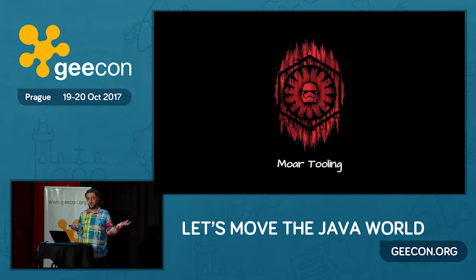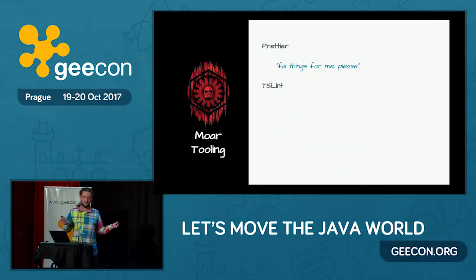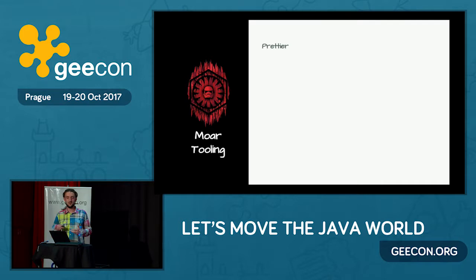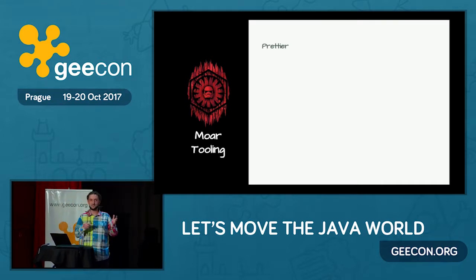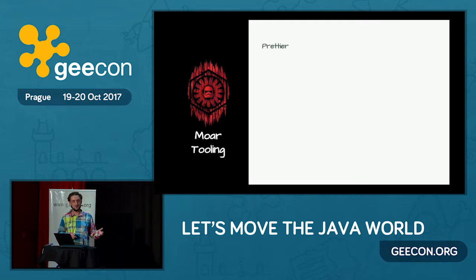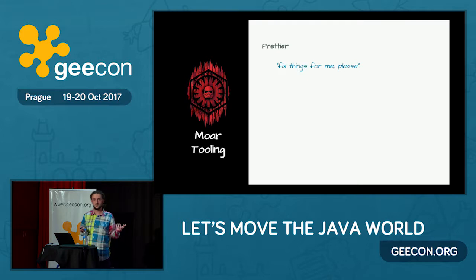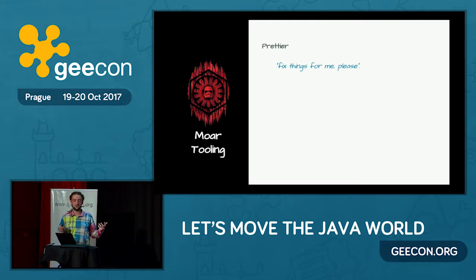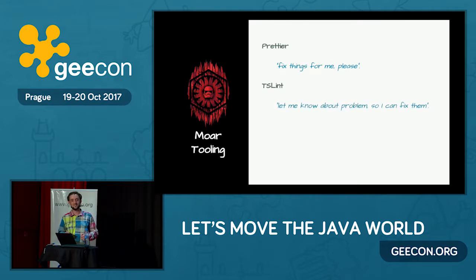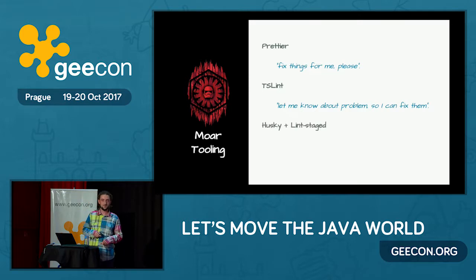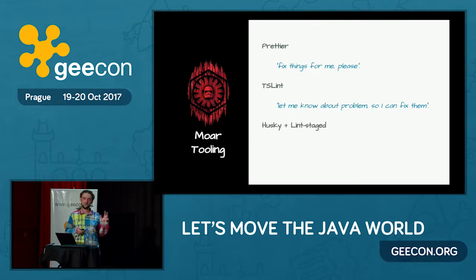What about more tooling? You know that feeling when you are in a code review and you're arguing with a colleague — 'hey dude, this space there, can you remove it? Or those braces, can you put them on a new line?' This is such a waste of time, and there are tools for that. We are using Prettier, which is a code formatter — kind of opinionated, but it works. It formats your code automatically, so you don't have to deal with that. Then, obviously, you need some style guides. We are using TSLint, which enforces those style guides and fixes them for us if possible. Then we are using Git and Node.js tools like Husky and Lint-Staged, which are triggered during pre-commit hooks and apply Prettier and TSLint on our codebase automatically.